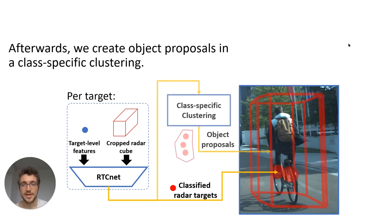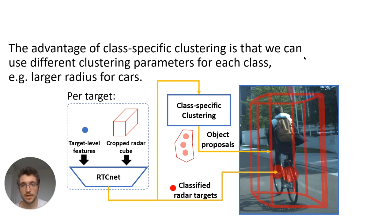After classifying each radar target individually, we also perform a class-specific clustering. On this image, you can see the grouped together radar targets inside this cage, which means that these targets are not only recognized to be from a bike, but also to be from the same bike. There is a big advantage of doing this class-specific clustering, and that is that we can use different clustering parameters for each class.